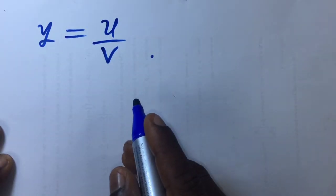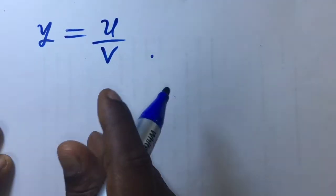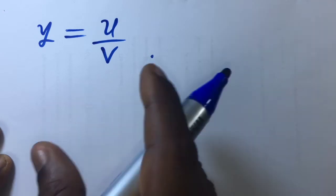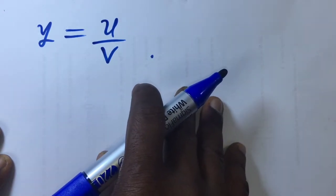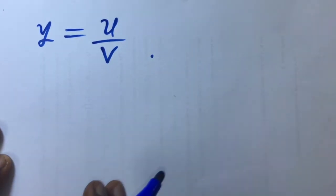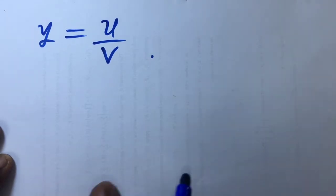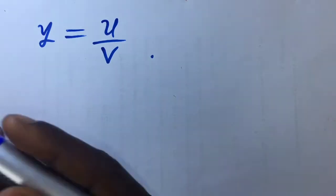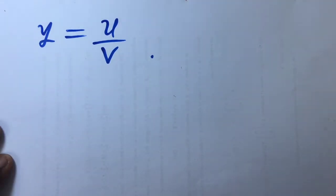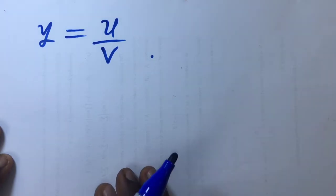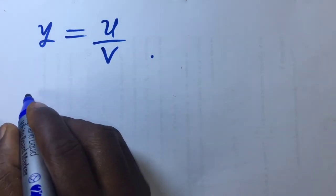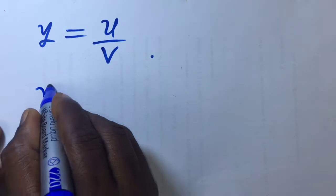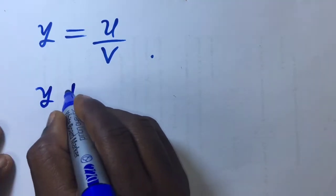Welcome back. If given y equals u over v, what we want to show or prove is the quotient rule of differentiation. I will want you to make recourse to my video on product rule of differentiation. We are going to start with step one. Like we discussed in my video on first principle of differentiation, in step one you make increments in the dependent and independent variables.